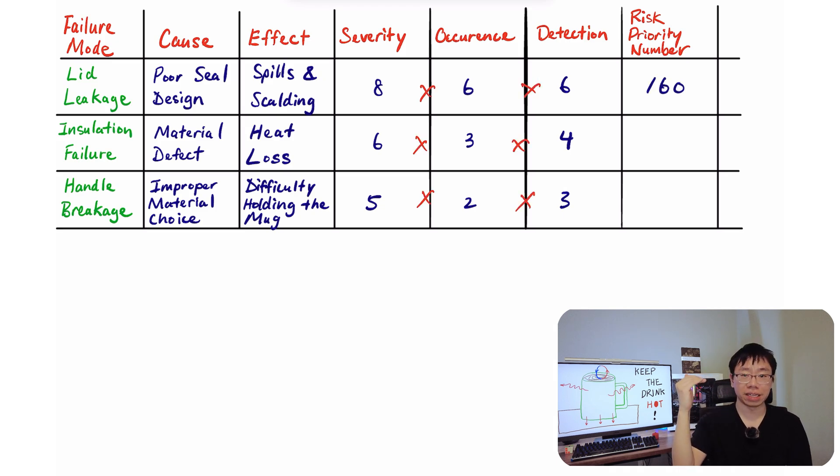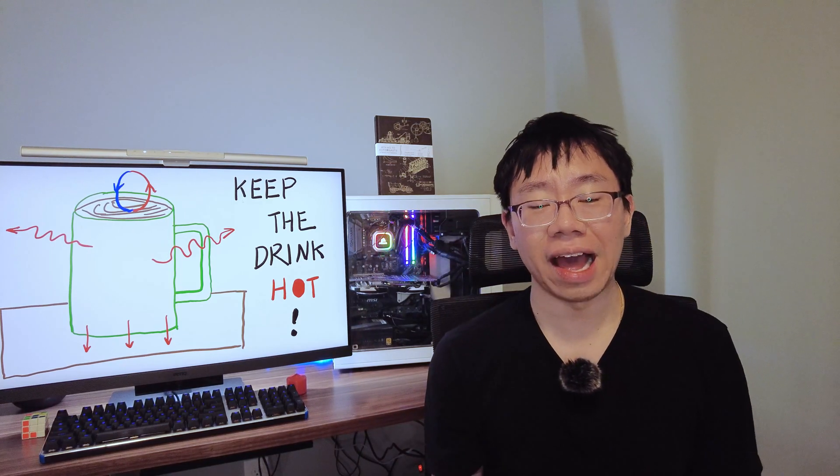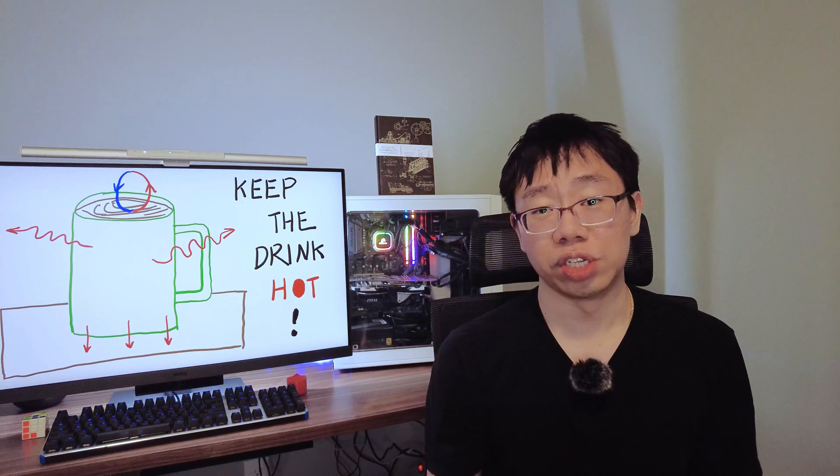The higher the RPN, the more urgent it is to address the issue. For example, lid leakage is the highest priority because it has a severe effect, a high likelihood of occurrence, and a low likelihood of being detected before it reaches the end user.